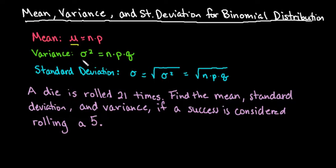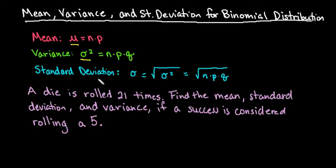The variance — sigma squared is the notation you use to represent it — and for a binomial distribution this is the easiest hand calculation out of all types of variance. All you have to do is n times p times q, where n is the number of trials, p is the probability of success, and q is the probability of failure.